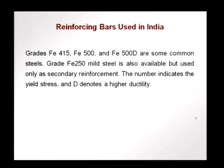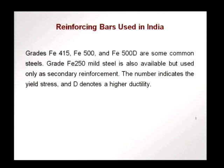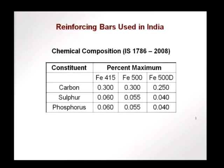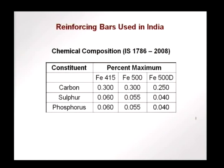Currently the common grades of steel used as reinforcement in India are Fe415, Fe500, and Fe500D. Grade Fe250 mild steel is also available but only used as secondary reinforcement. The number indicates the yield stress used in design, and when we have a D following the number, that means there is a higher ductility requirement. The chemical composition is regulated by IS standard 1786, with limits on constituents like carbon, sulphur and phosphorus — the higher the grade, the stricter the requirement.